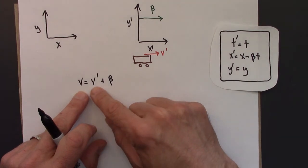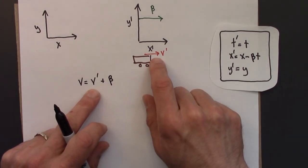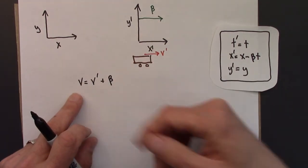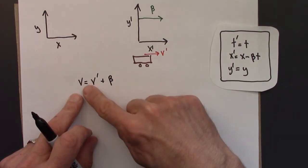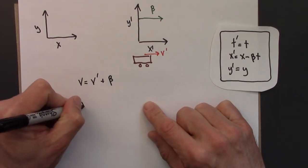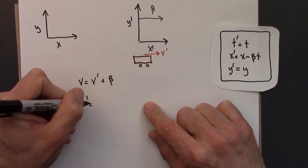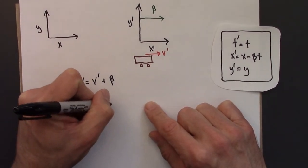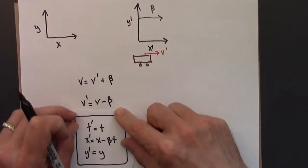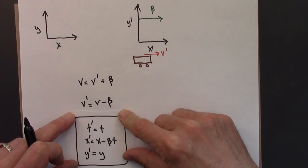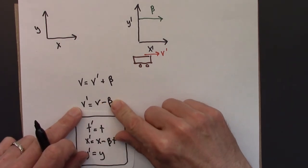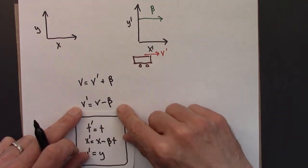So the velocities add. We see the velocity of the ball thrown on the train plus the velocity of the train, so overall the ball is going at v-prime plus beta. Rearranging to put the primes on the left gives us the transformation equation for velocities under Galilean relativity.